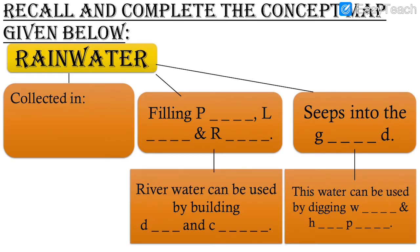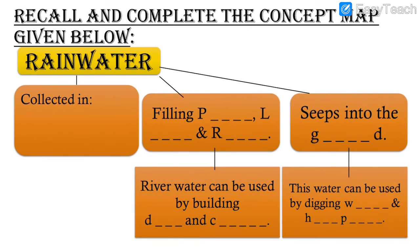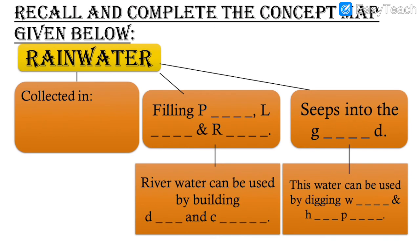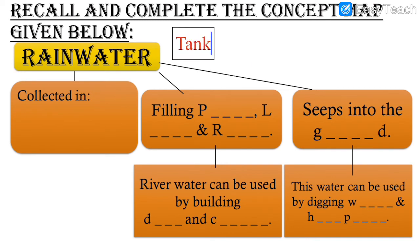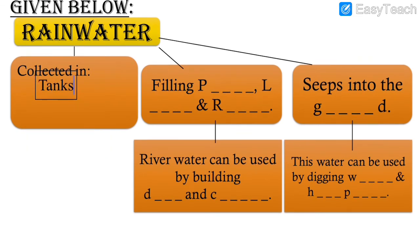Next we have an exercise: Recall and complete the concept map given below. This is the textual exercise from your lesson in your textbook. Let us complete this concept map to revise the chapter. The first part: Rainwater is collected in — tanks, drum, and bucket, because rainwater is collected in all these containers.